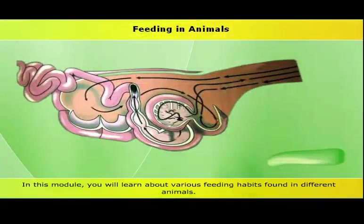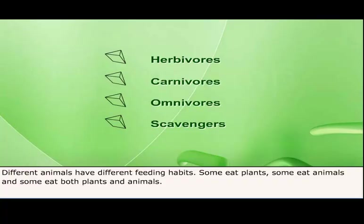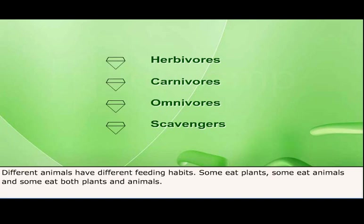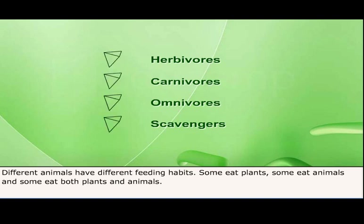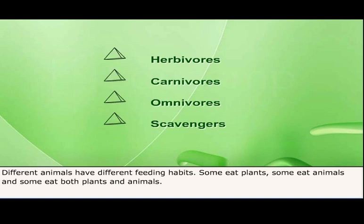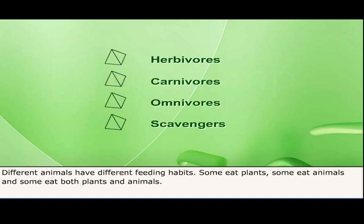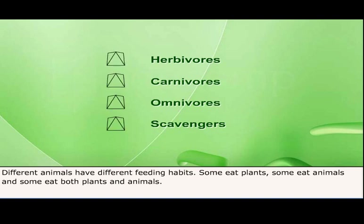Feeding in animals. In this module, you will learn about various feeding habits found in different animals. Different animals have different feeding habits. Some eat plants and are called herbivores. Others eat animals and are termed carnivores. Some eat both plants and animals and are called omnivores, whereas those which eat the dead remains of other organisms are referred to as scavengers.